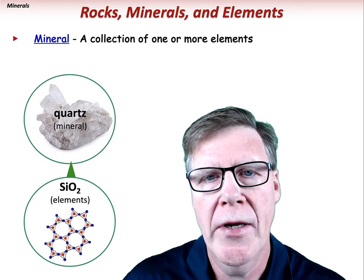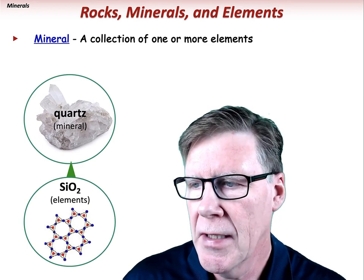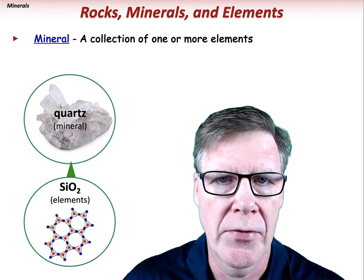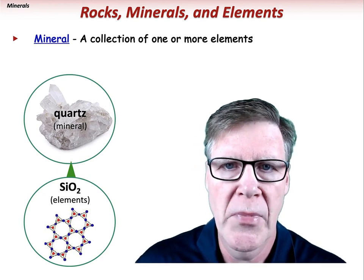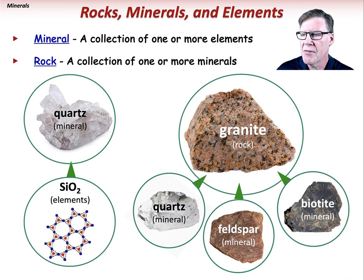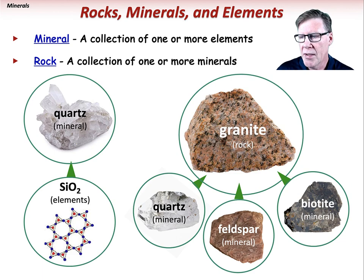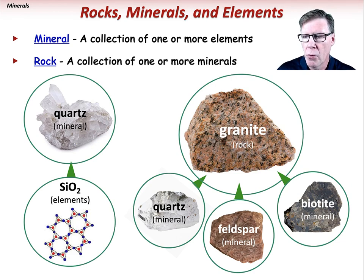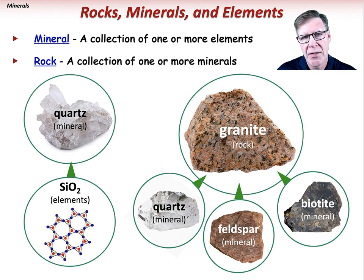Atoms, when arranged in an orderly fashion, can together compose larger molecules and compounds, or minerals, which in turn make up the rocks that we see all around us. For example, specific proportions of the elements silicon and oxygen, covalently bonded together in an orderly, continuous framework, form the mineral quartz. Quartz is one of several rock-forming minerals, together with feldspar and biotite, that compose the rock type granite.